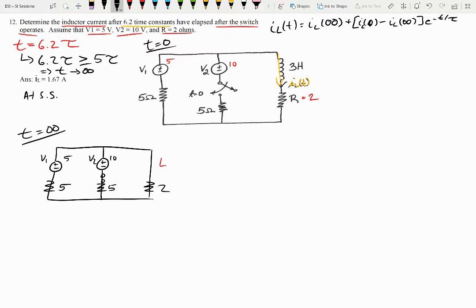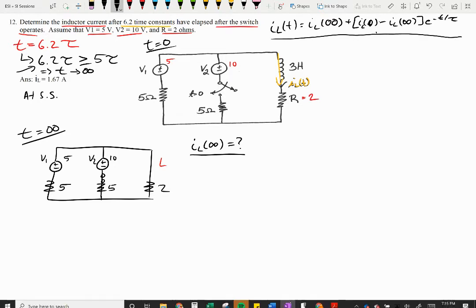But something to note, if they want to know at the six time constants, they just want to know what I of L at infinity will be. So this is what we know that we're looking for, this I of L at infinity, then all we need to do is to determine this value.